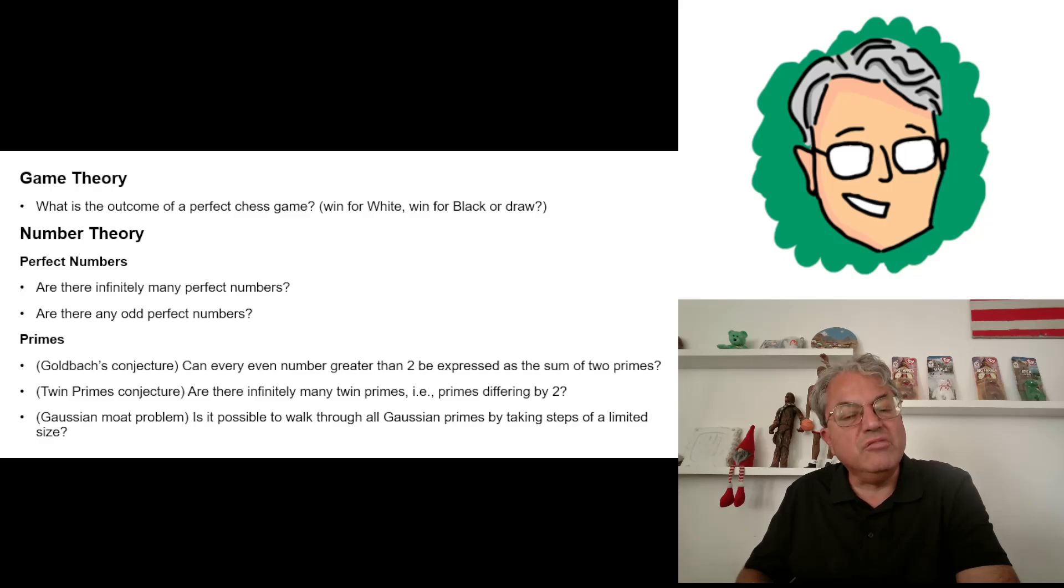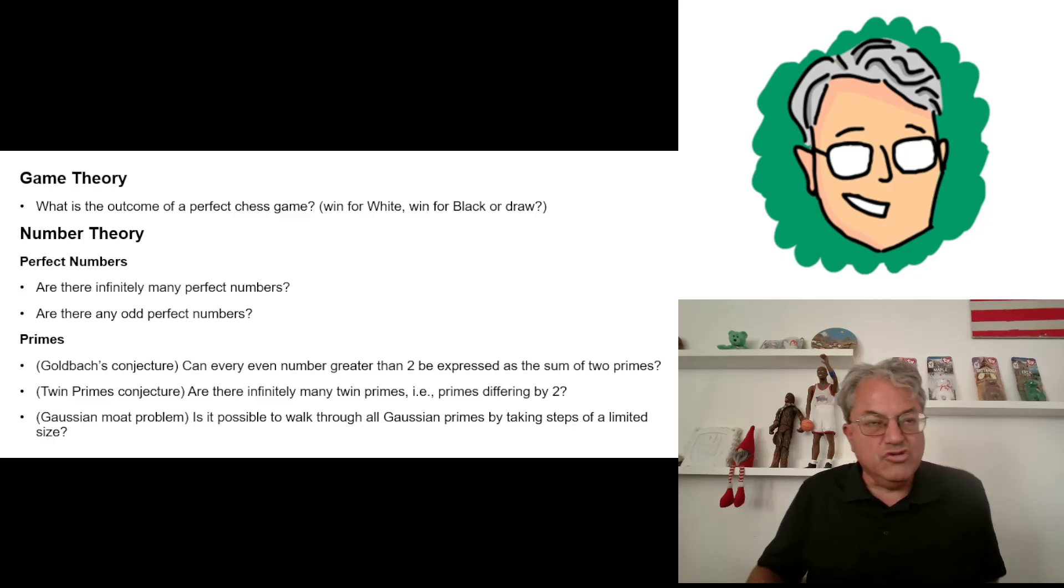Game theory. I think von Neumann proved this back in the 1950s, that chess, there is an optimal strategy for playing chess that guarantees that if both players play by the best possible moves, each player makes the best possible moves under any circumstances. Von Neumann proved that the game at least has to end in a draw. So the question is, what's the outcome? Who wins? Does it end in a draw necessarily, or does white win, or does black win? That's not known either.